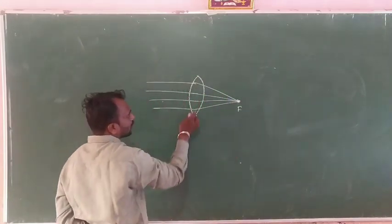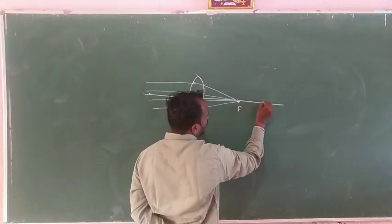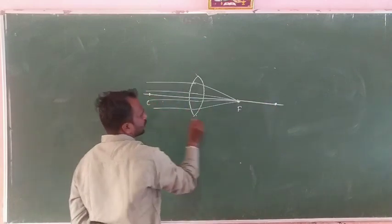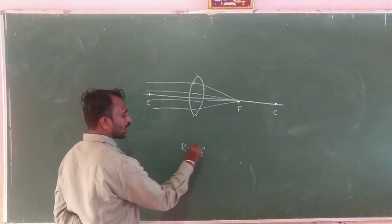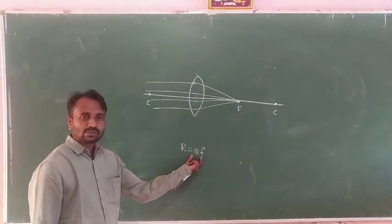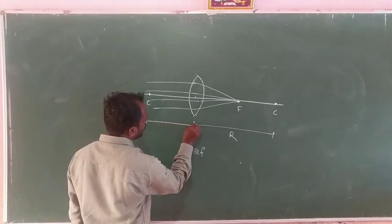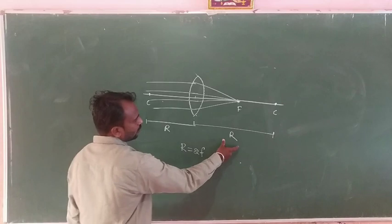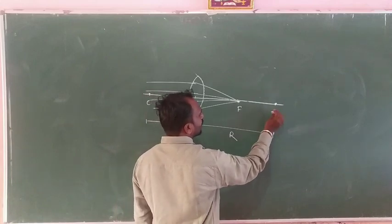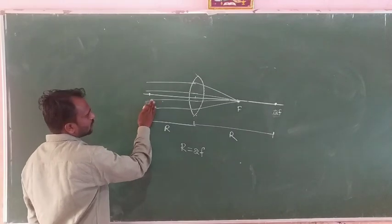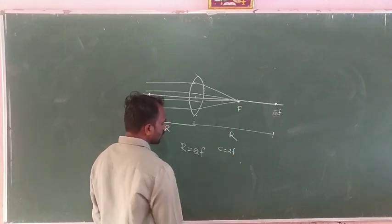The lens has two centers of curvature. You already know that the radius of curvature is two times the focal length: R = 2f. So the optic center to the center of curvature equals the radius of curvature, and those points are labeled 2F on both sides.